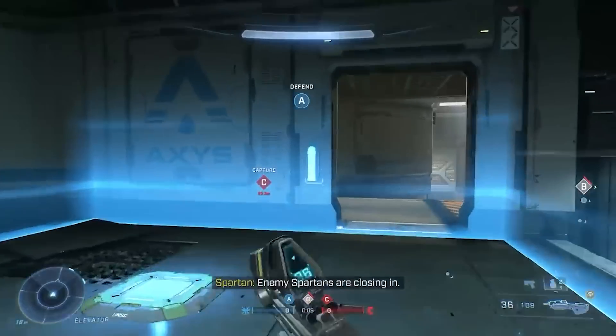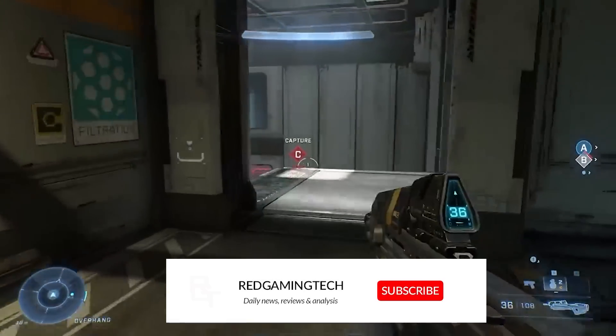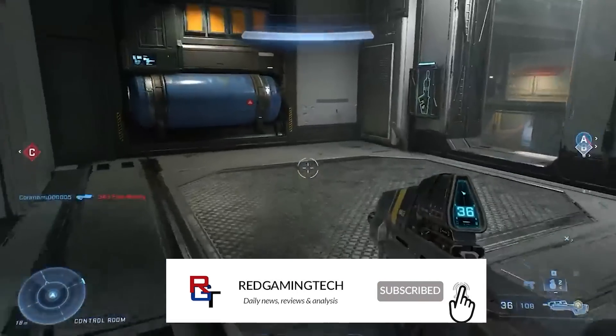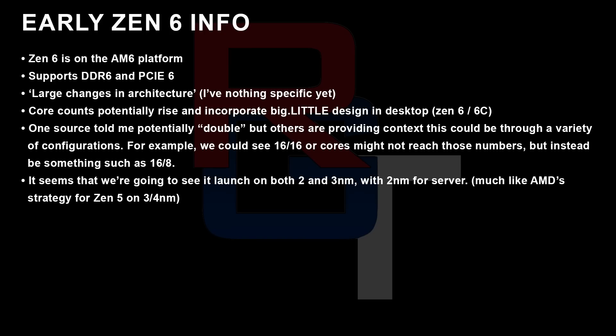Because this design is so far away — it's not going to launch tomorrow — stuff can change during development and scope can change. But this is what I've heard so far: Zen 6 is on the AM6 platform; it will not be on AM5. This will almost certainly support both DDR6 and PCIe 6. Remember, Zen 5 launches next year, and then we're looking at a couple more years on top of that before Zen 6 comes to market — so this is like three to four years into the future. Large changes in architecture, but I haven't got anything specific beyond a few murmurs I don't really trust.